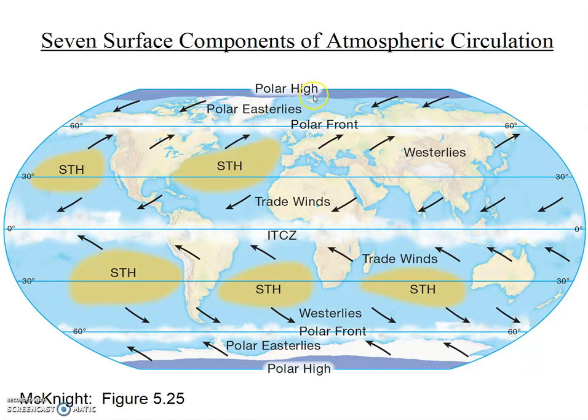Our final wind, the polar easterlies, originates in the high-pressure polar high and flows clockwise convergent flow from the polar high to the polar front. Again, you can see it as an easterly wind because it's flowing from the east towards the low pressure of the polar front.